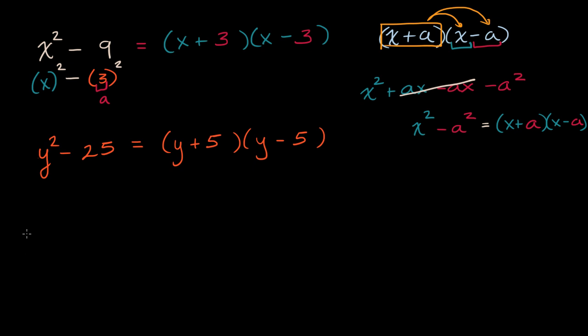We could write 121 minus b squared. This is a difference of squares because 121 is 11 squared. So this is going to be 11 plus something times 11 minus something. In this case, that something is the thing that was squared: 11 plus b times 11 minus b.